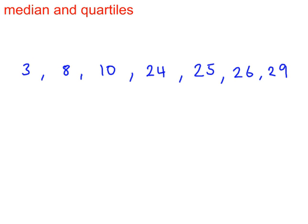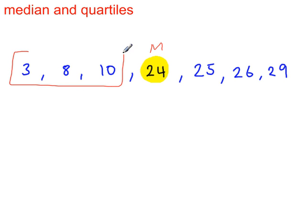The median is always the middle number, and 24 here is right in the center, so that's the median. Now look at the lower half of the data — the middle number there is 8. 8 is the lower quartile.